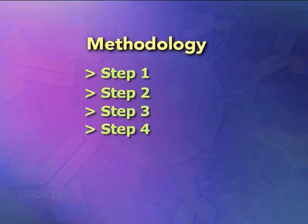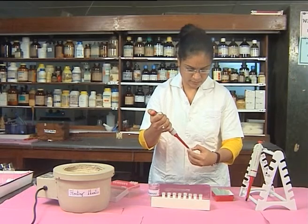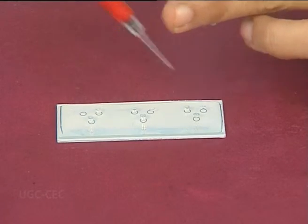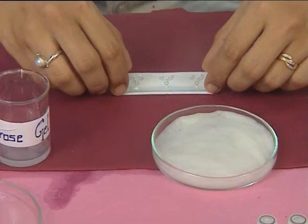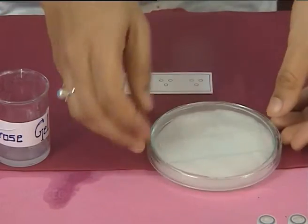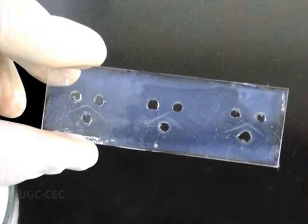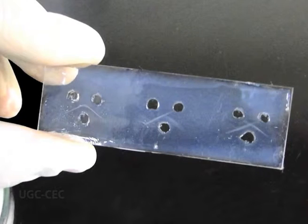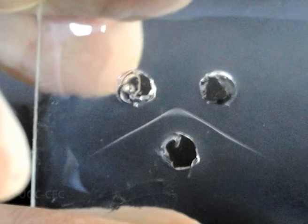Step four: fill the wells with 10 microlitres each of the antiserum and the corresponding antigens. Step five: keep the glass slide in a moist chamber overnight at 37 degrees Celsius. Step six: after incubation, observe for the opaque line of precipitation between the antigen and antiserum wells. Step seven: report the pattern of identity of the sample antigens.